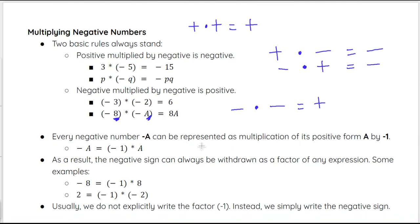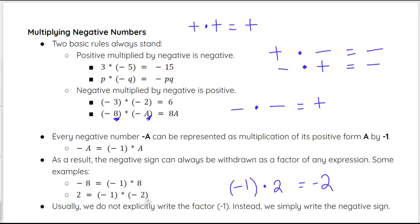Every negative number — negative A, for instance — can be represented as multiplication of its positive form by negative 1. So negative A is really negative 1 times positive A. As a result, the negative sign can always be withdrawn as a factor. For example, negative 8 can be rewritten as negative 1 times positive 8. If we pull a negative 1 out of a positive 2, the remaining factor must be negative 2, because negative 1 times negative 2 brings us back to positive 2.